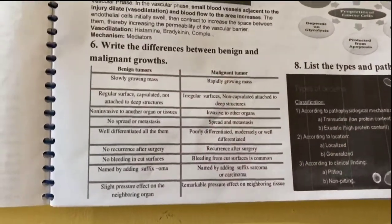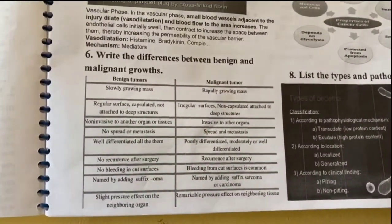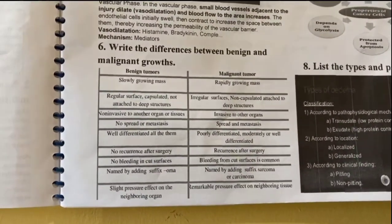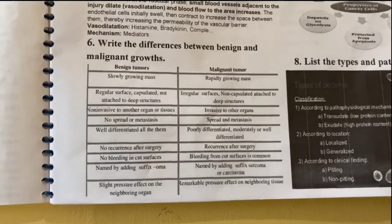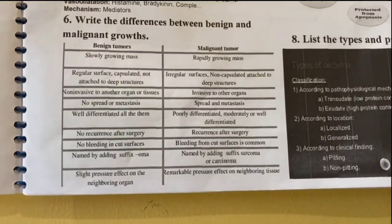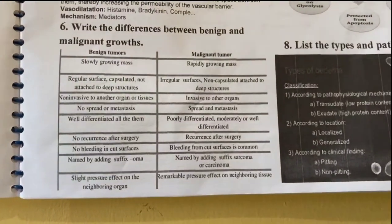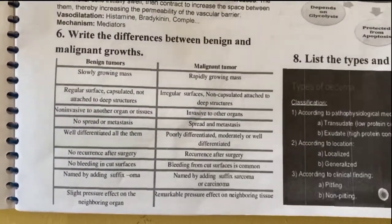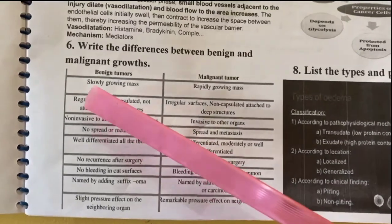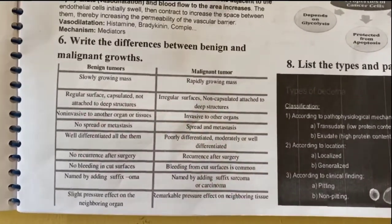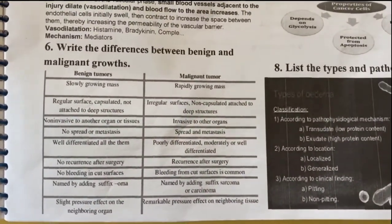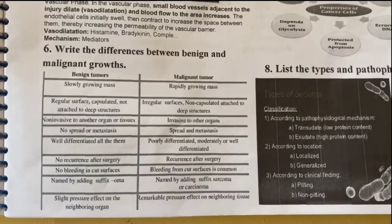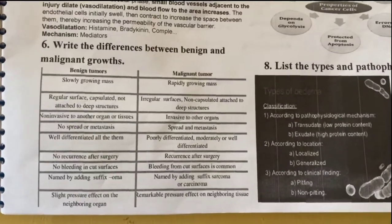Next question: write the differences between benign and malignant growths. What is a benign tumor and a malignant tumor? Benign tumors are those tumors that do not invade other parts of the body.